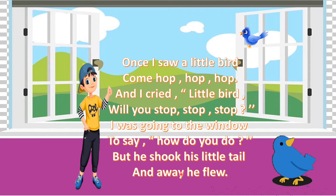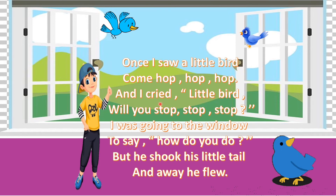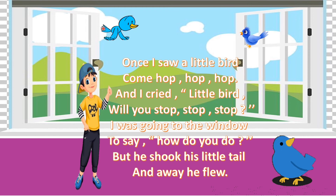Now children, let's understand this poem properly. This little boy saw a little bird, and the bird was coming by hopping — moving up and down, coming towards the window. And I cried, little bird — here, this boy cried, meaning he asked loudly, 'Little bird, will you stop for me?' This boy was going to the window to say 'How do you do?' — he wanted to greet the bird. But the little bird shook his little tail and flew away.